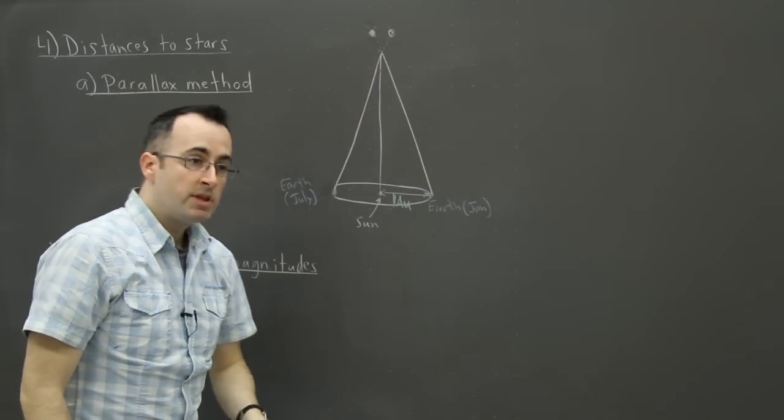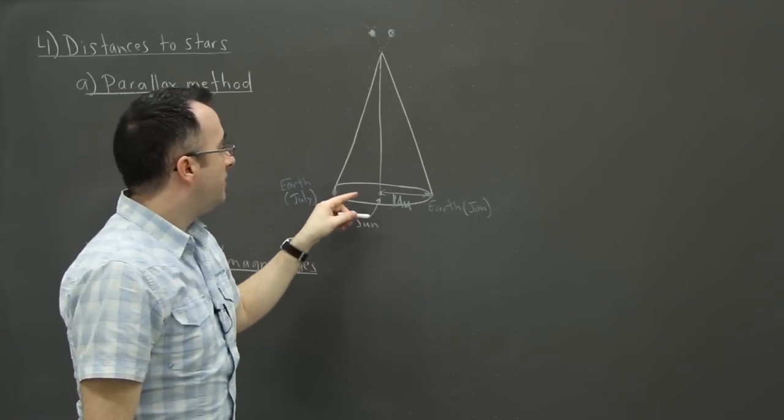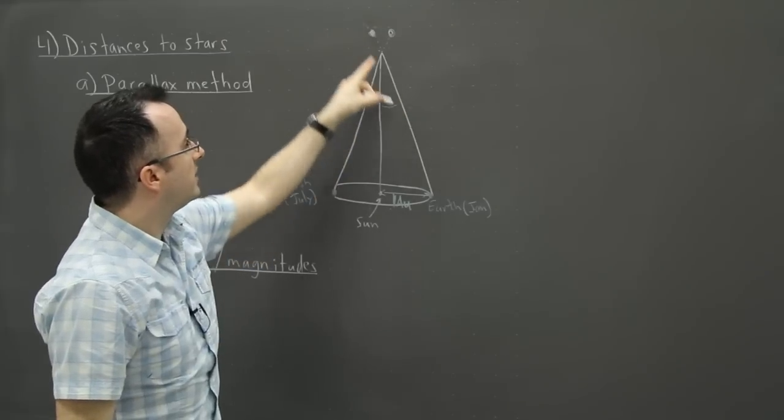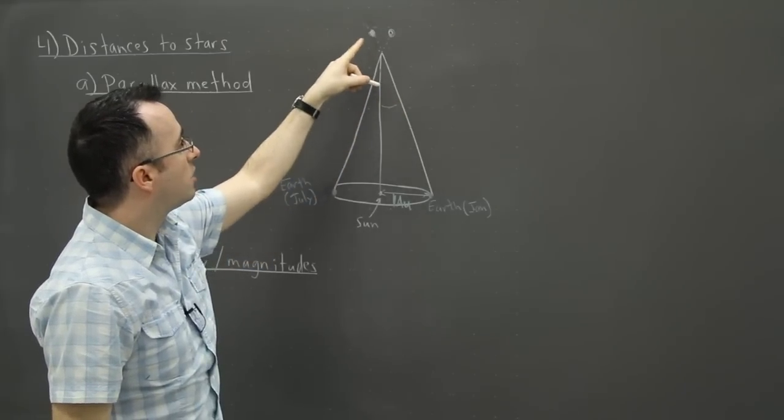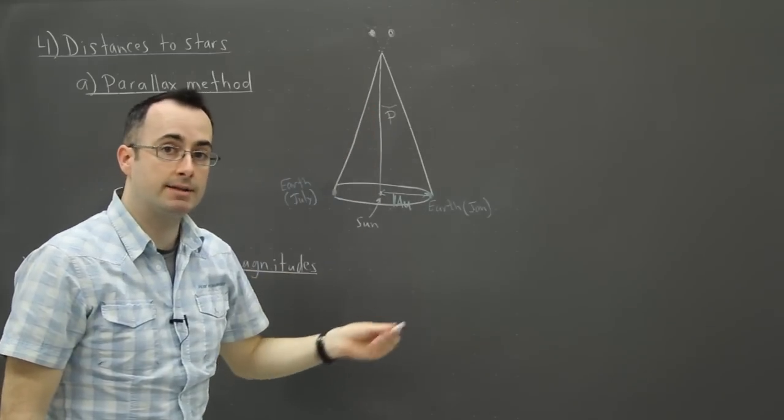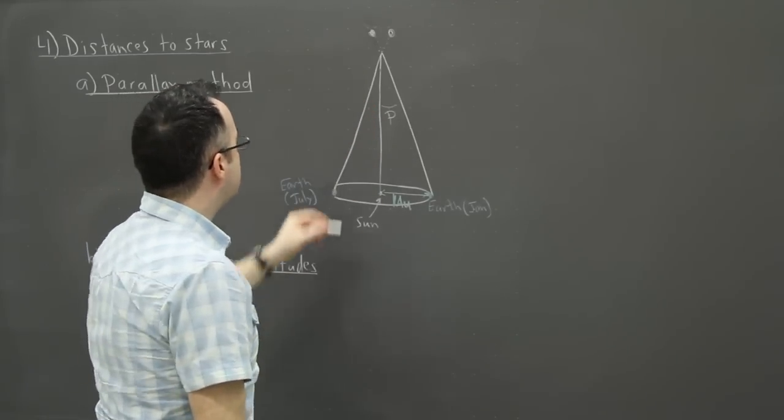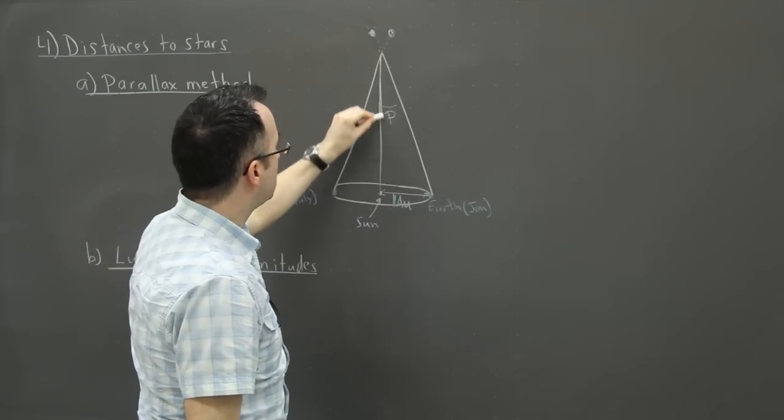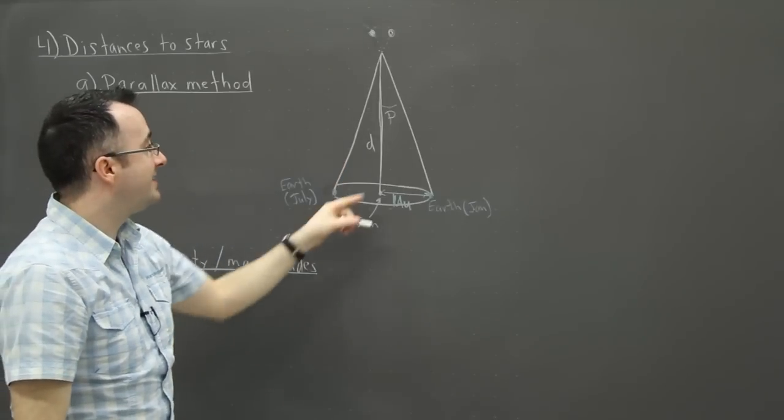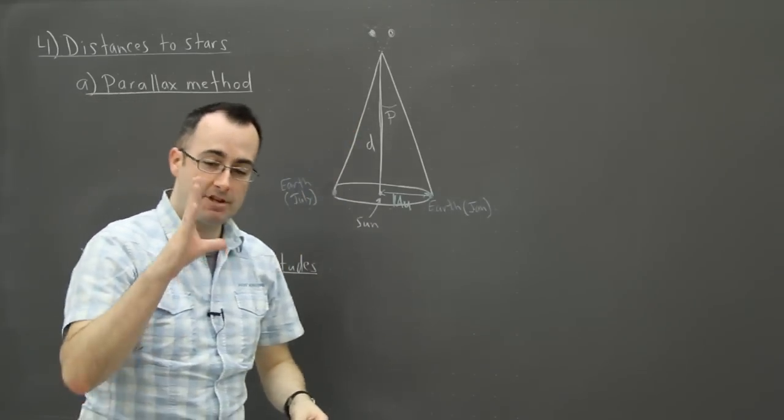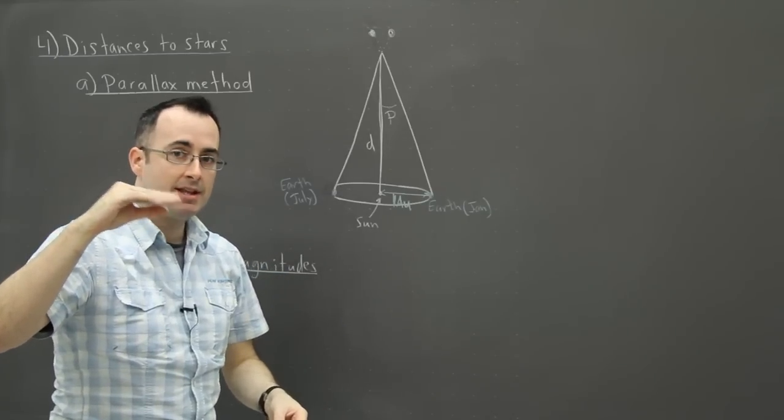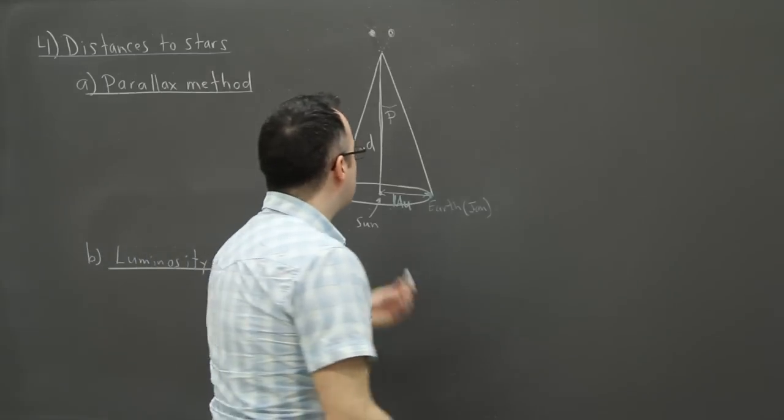What we can do is, if we know our distance here, which we do, and if we know this angle, which we can tell based on how the star seems to have jumped, this angle we're going to call P for parallax angle. Then we have this distance right here—that's going to be D, the distance away. That's what we want. It turns out for sufficiently small angles, you don't have to worry about sines, cosines, or tangents—they effectively sort of go away.